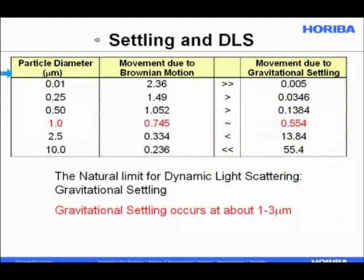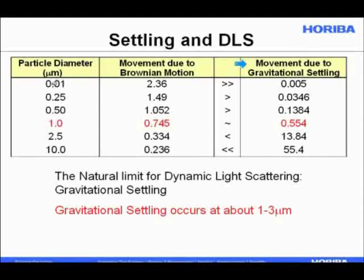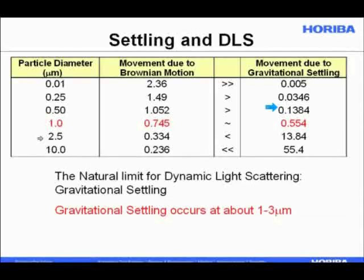A second practical consideration is settling. Dynamic light scattering works up to reasonably large particle sizes — many microns — but gravity is present and we're measuring particle motion. For a 10 nm particle, Brownian motion is much stronger than gravitational settling. Even at 500 nm, settling is not an issue. Above one micron, gravitational settling can become a problem — particles move in unintended ways during measurement, and they end up at the bottom of the cuvette, outside the measurement area. This is the natural upper size limit for dynamic light scattering.